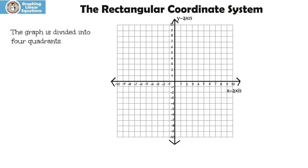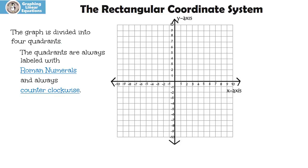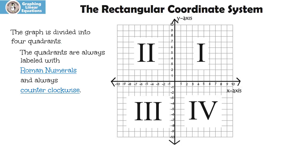The graph is divided into four quadrants. The quadrants are always labeled with Roman numerals and always run counter-clockwise. Let me show you. This is the first quadrant, second quadrant, third quadrant, and fourth quadrant.